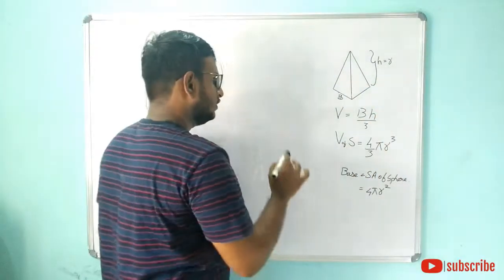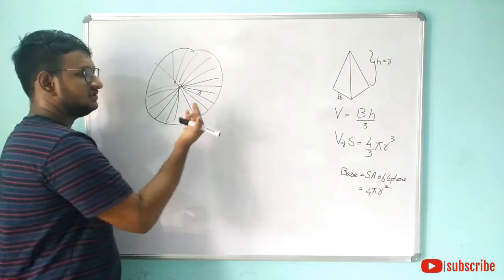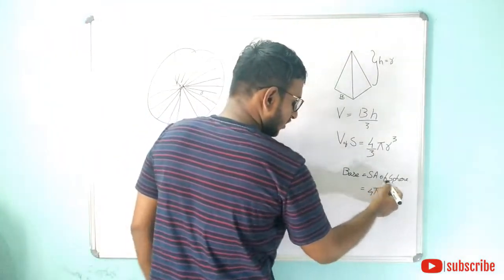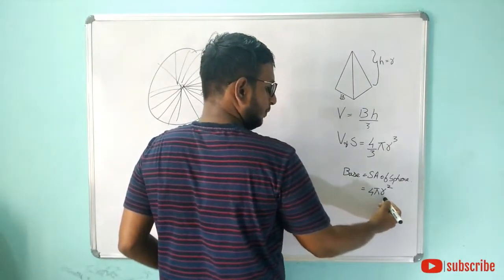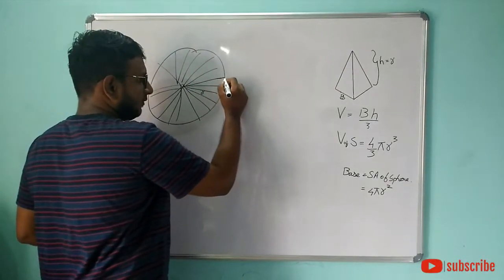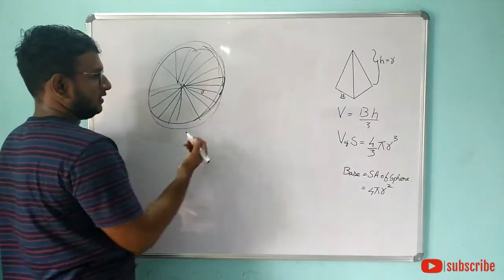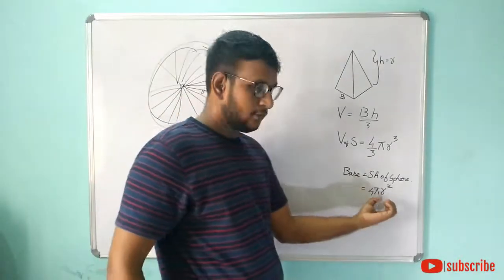The base of the pyramid is the surface area of sphere which is 4 pi r square.